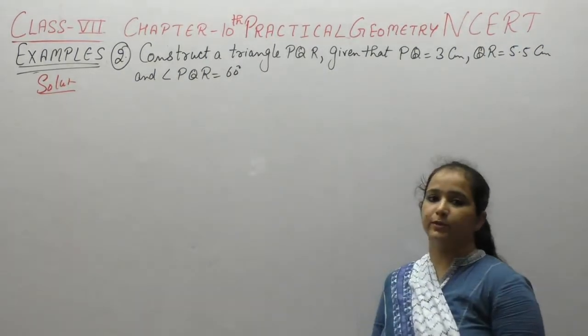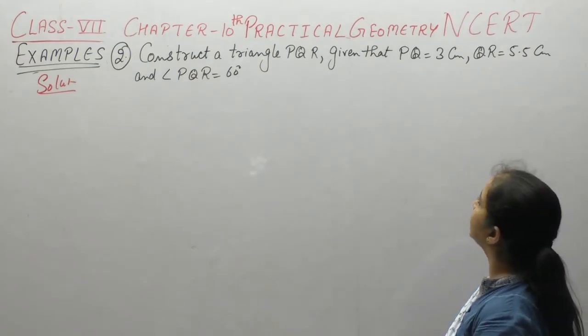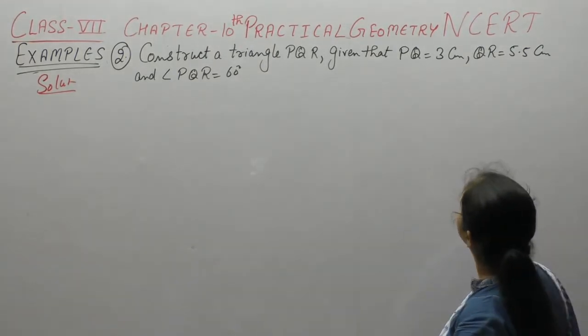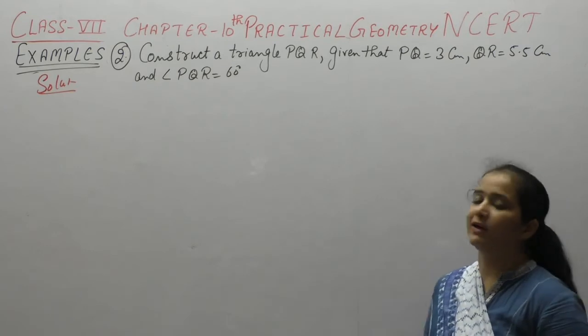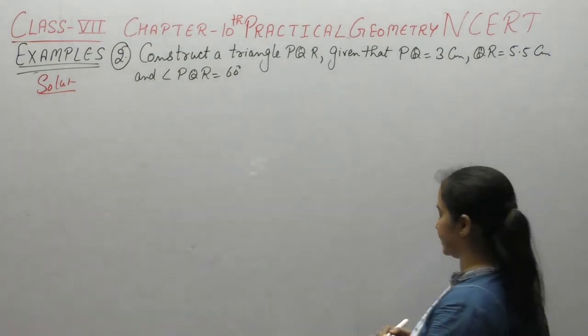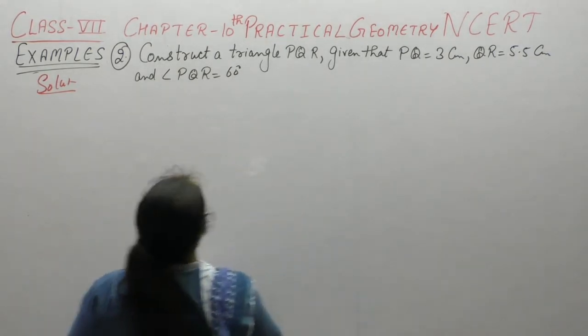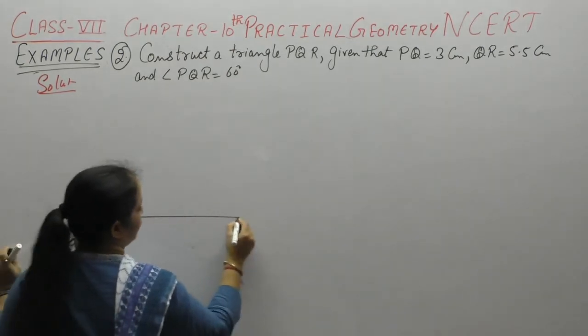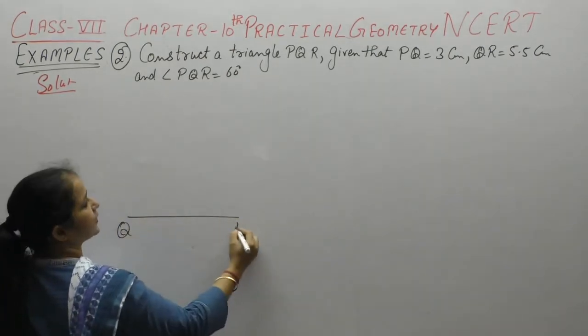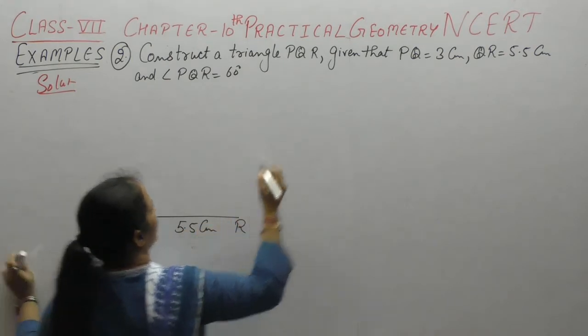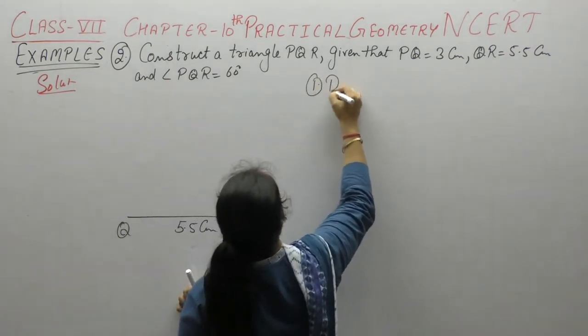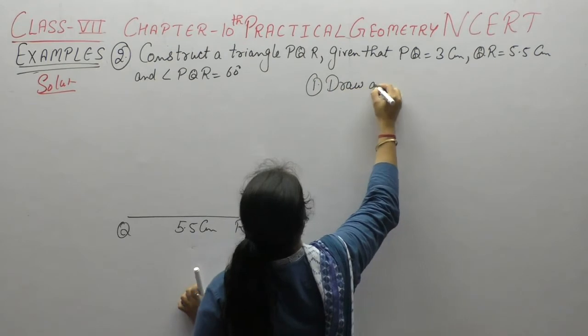Let's construct example number two: construct a triangle PQR given that PQ is 3 cm, QR is 5.5 cm, and angle PQR is 60 degrees. So sub se pehle draw a line segment QR equals 5.5 cm.